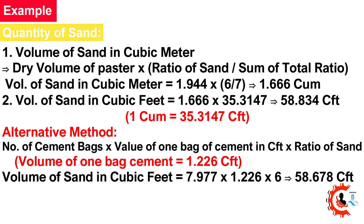Quantity of Sand: Volume of sand (m³) = Dry volume × (ratio of sand / sum of ratio) = 1.944 × (6/7) = 1.666 m³. Volume of sand in cubic feet = 1.666 × 35.3147 = 58.834 cubic feet.